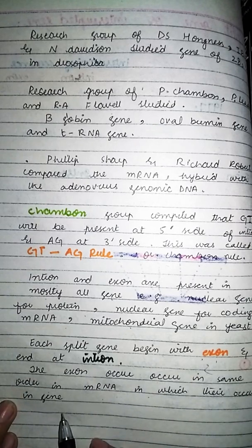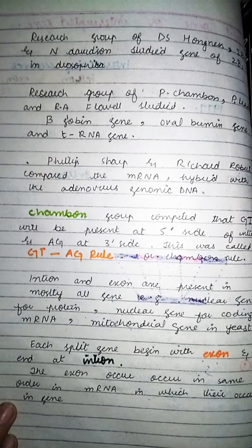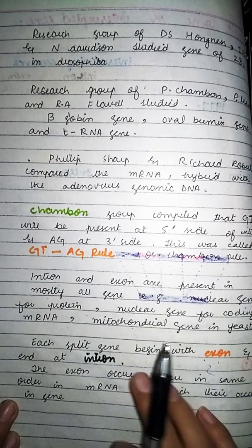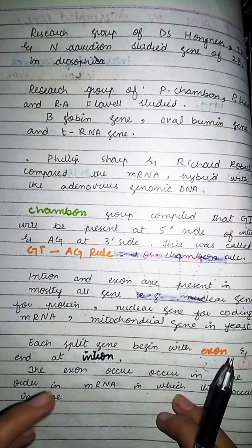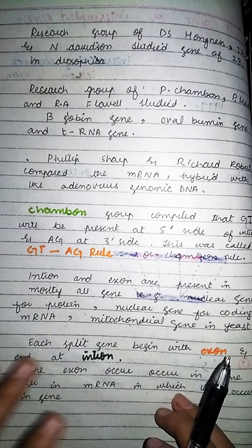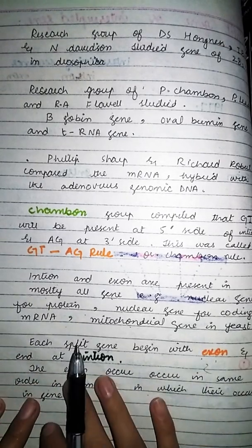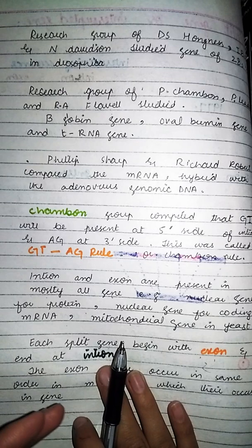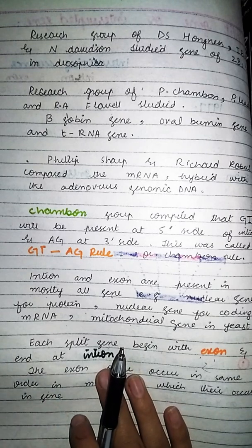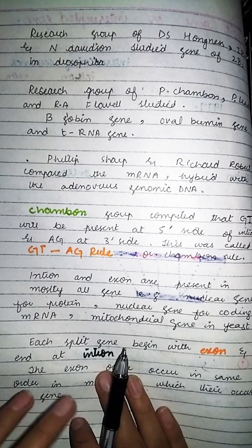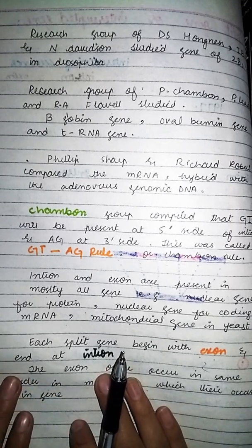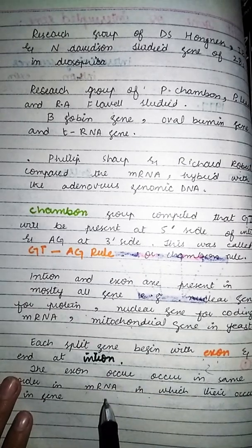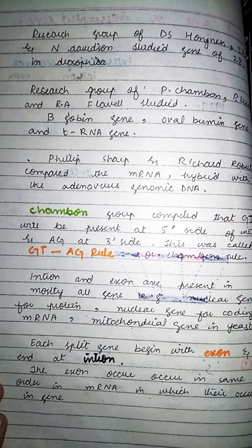Exon کا جو order ہوتا ہے messenger RNA میں، وہ same ہوتا ہے جو DNA میں ہوتا ہے۔ DNA میں intron بھی present ہوتا ہے، لیکن جب messenger RNA بنتی ہے تو splicing کا process ہوتا ہے اور intron کو remove کر دیا جاتا ہے — اس لیے exon کا sequence، messenger RNA میں same order میں ہوتا ہے۔